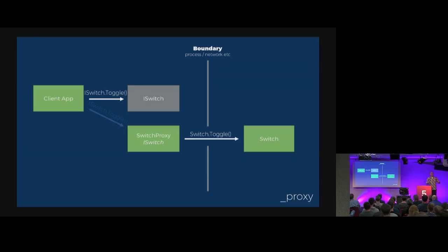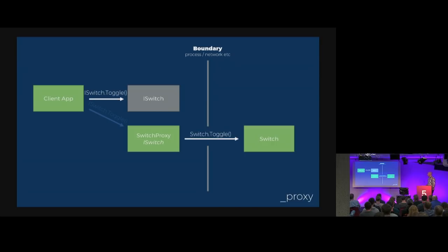It doesn't necessarily need to be crossing the internet — it's a way for you to call objects that are not local to your application. The client sees an ISwitch, implemented by the switch proxy, and calls toggle without knowing what's happening. It just assumes it's calling some piece of code, but in the real world it's actually going across the network and turning on the lights in the ceiling. It's really weird that we are literally turning on lights wirelessly now, but that's the way it works. Proxies are kind of useful.